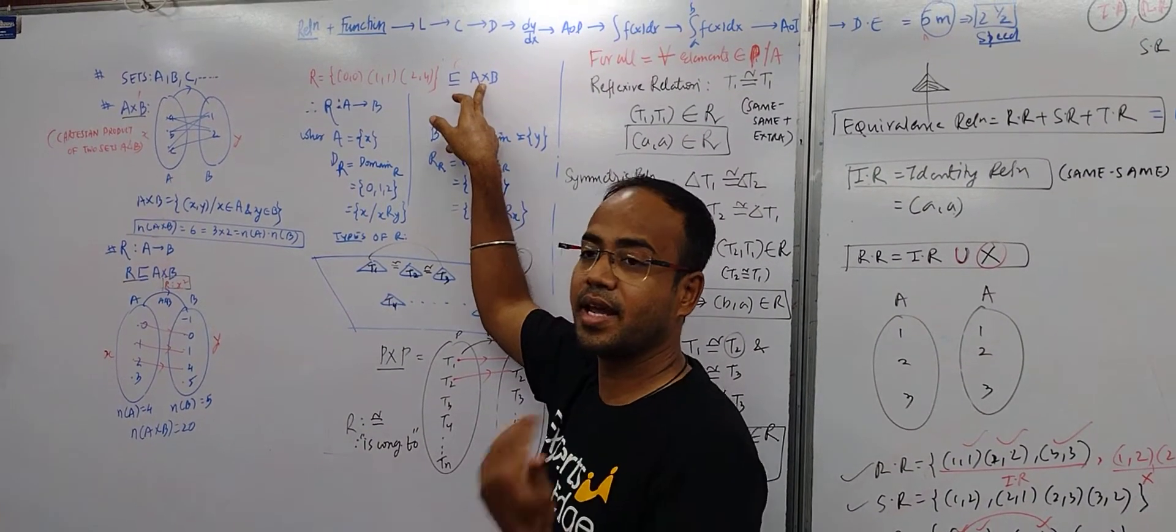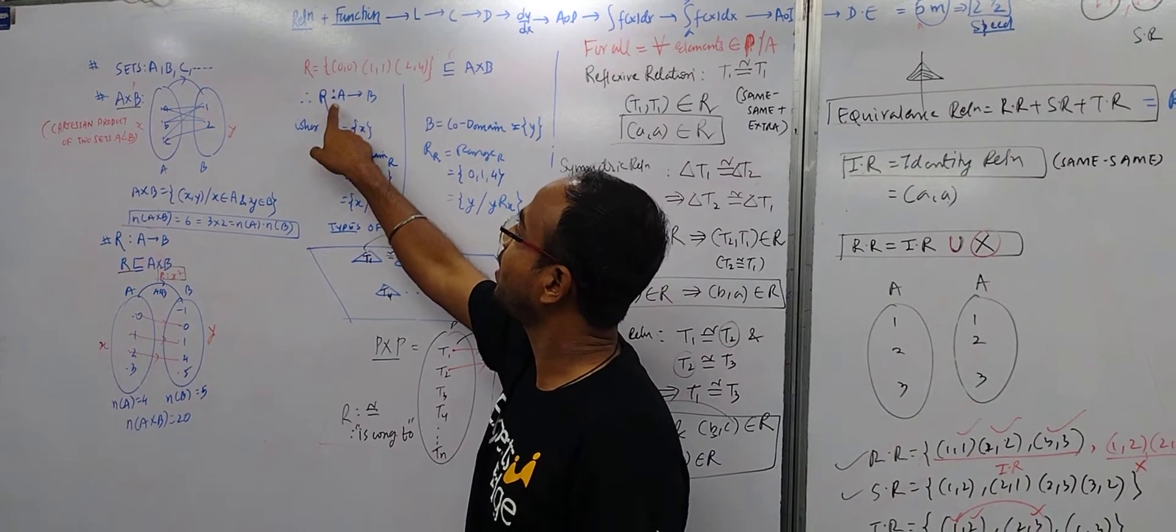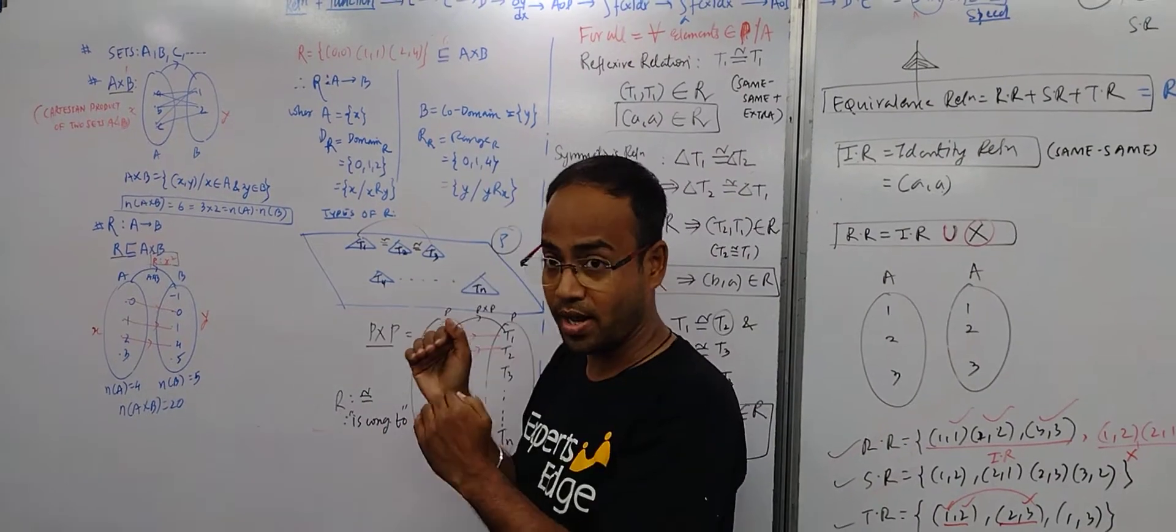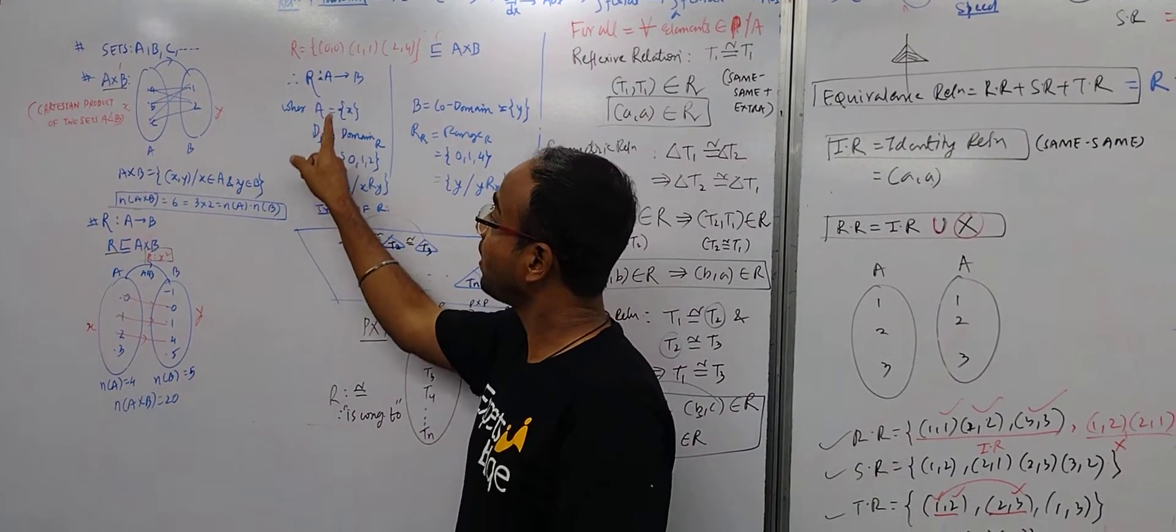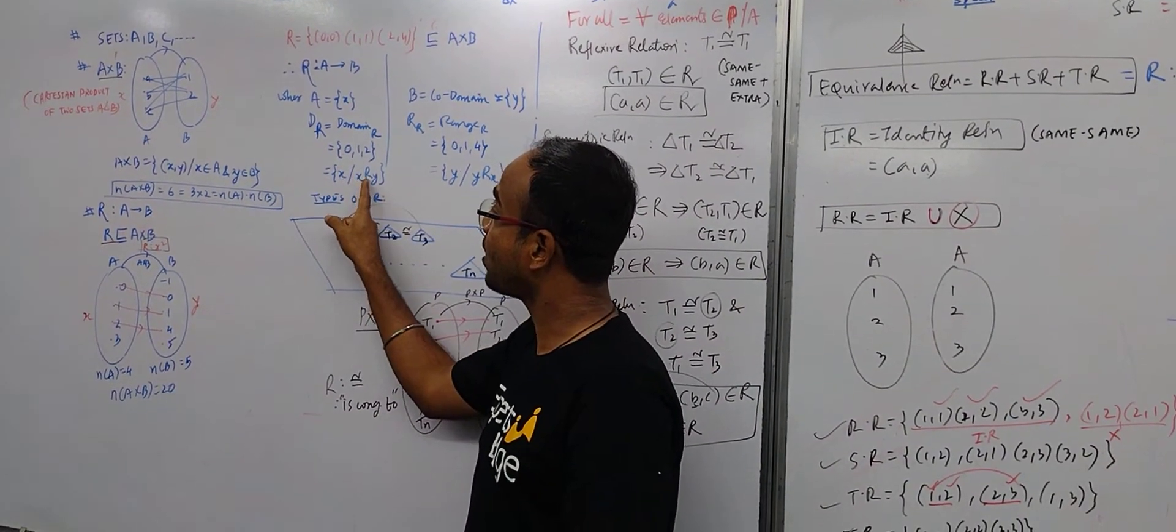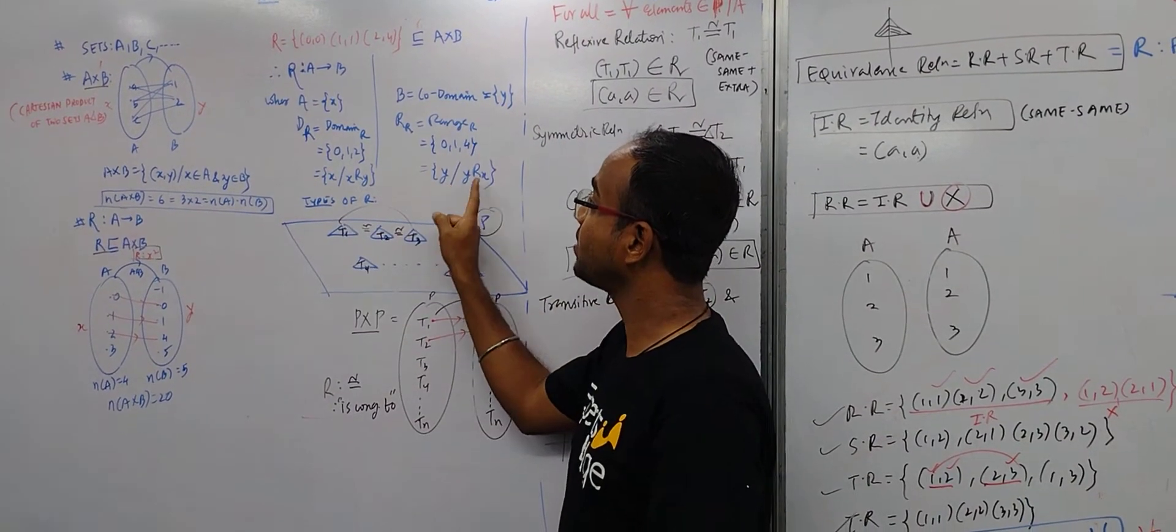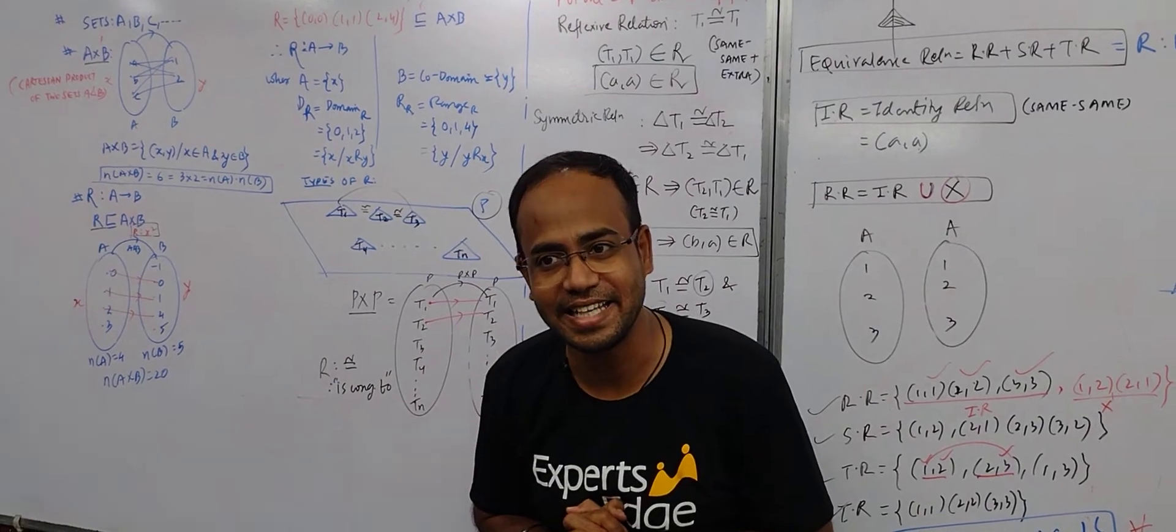And what is A cross B? So this means that R is subset of A cross B, where A means the whole set X, B means the whole set Y which is the codomain, and the set R contains elements where X is related to Y.